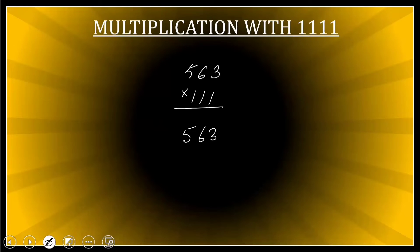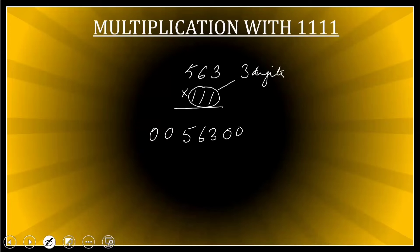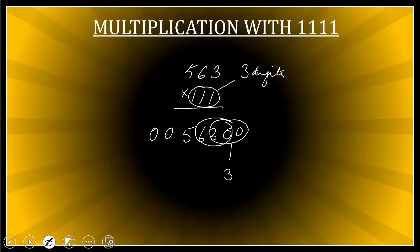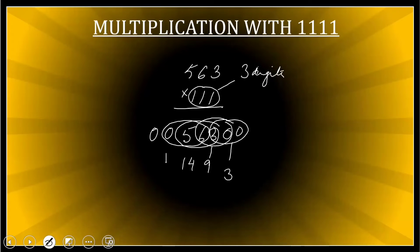563 multiplied by 111. How many digits in 111? Three digits — so I use two zeros for my sandwich: two zeros on the left and two zeros on the right of 563. Now, taking groups of three: first group is zero, zero, three — that gives 3 as the first digit. Next: zero, six, three — zero plus six plus three equals 9. Third group: five, six, three — five plus six is eleven, plus three is fourteen — so 14.